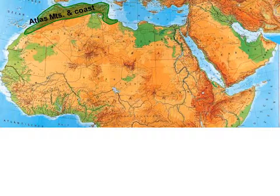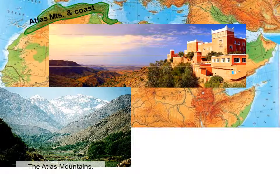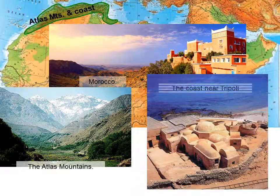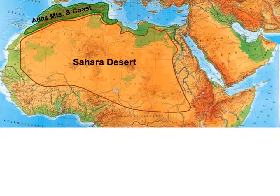First, the Atlas Mountains and the coast. Here are the Atlas Mountains. This picture of Morocco shows that this area is more fertile than the area to the east, which is the Sahara Desert. It gets more green, as you can see in the picture of the Atlas Mountains.